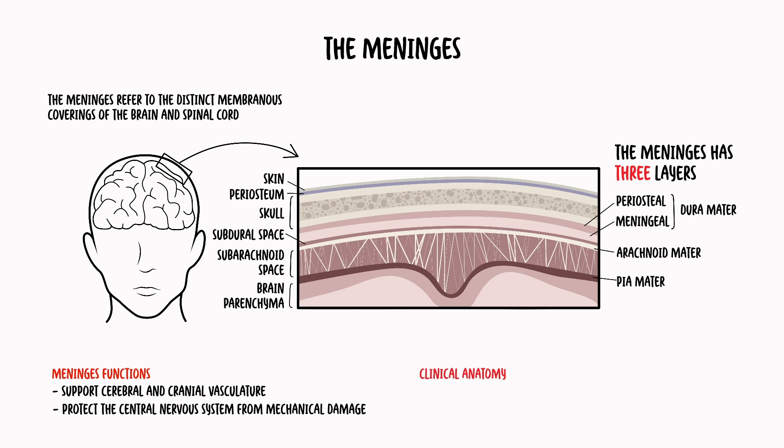Some clinical anatomy now. The meninges are often involved with cerebral pathology, as they are a common site of intracranial bleeds and infections, called meningitis. Let's first focus on the intracranial hemorrhages or hematomas — specifically, the extra-dural and sub-dural hematomas.